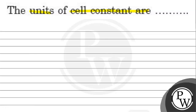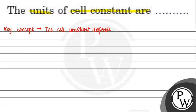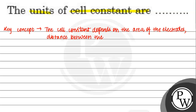So, first of all, the key concept of this question will be: the cell constant depends on the area of the electrodes, distance between the electrodes, and nature of electrolyte between them.